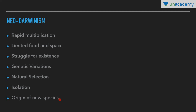For origin of new species: if an isolated population independently develops different types of mutations, these accumulate in its gene pool. After several generations, the isolated population becomes genetically and reproductively different from others, constituting a new species. So the sequence is: multiplication → limited resources → struggle for existence → genetic variations → natural selection → isolation → origin of new species.